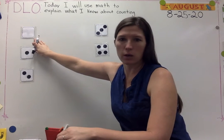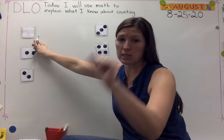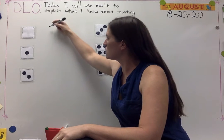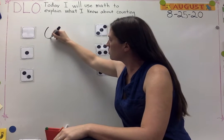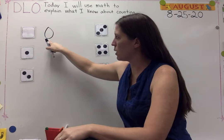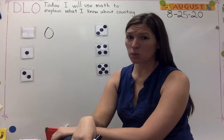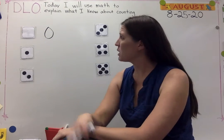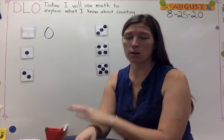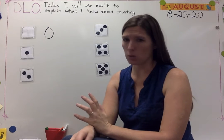How many are here? Nothing. Zero. I know there's zero there because there's nothing there, and the number for nothing is zero.